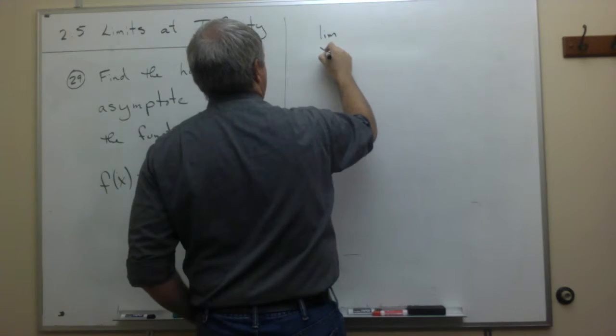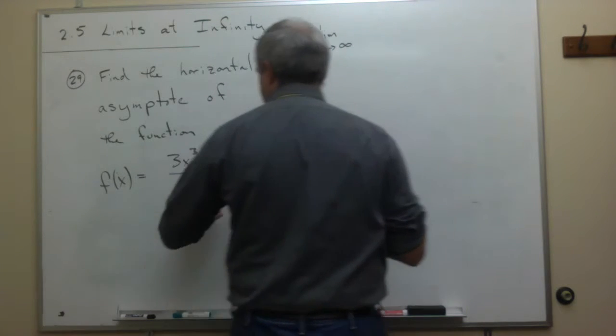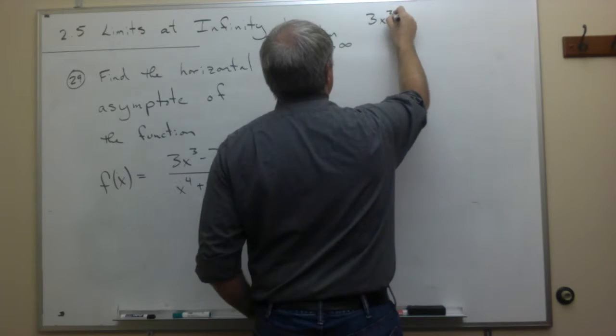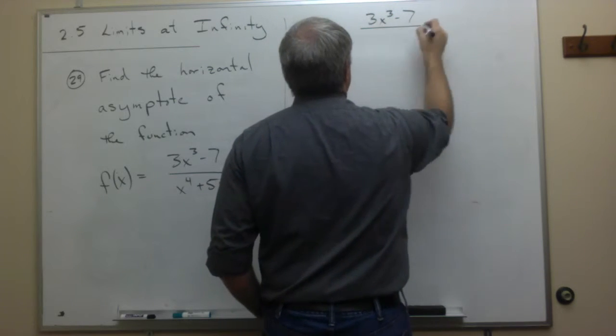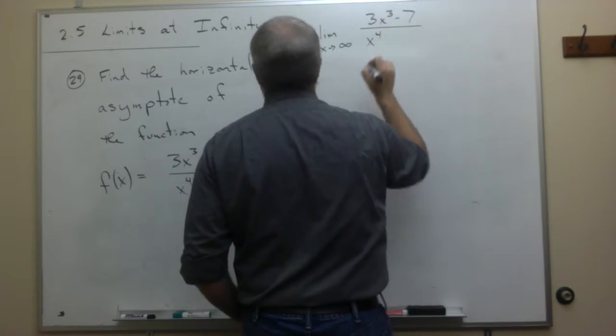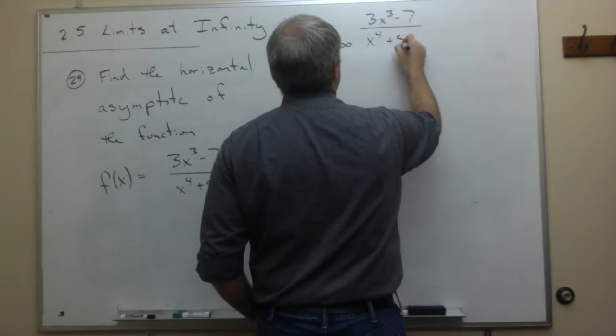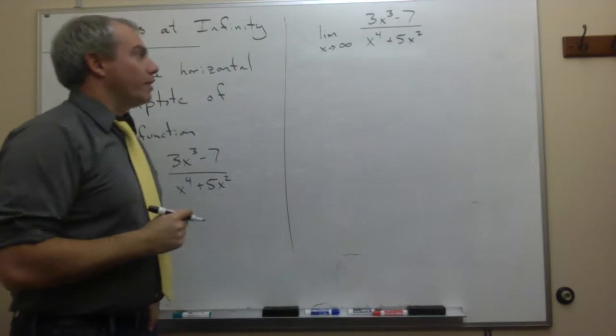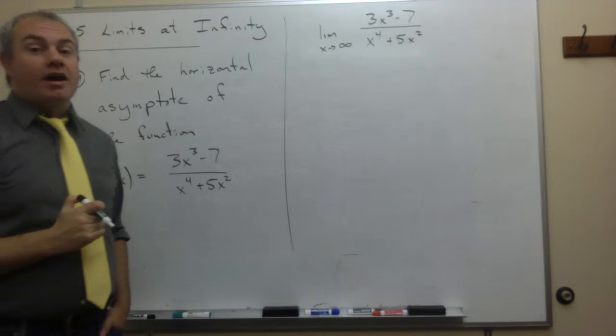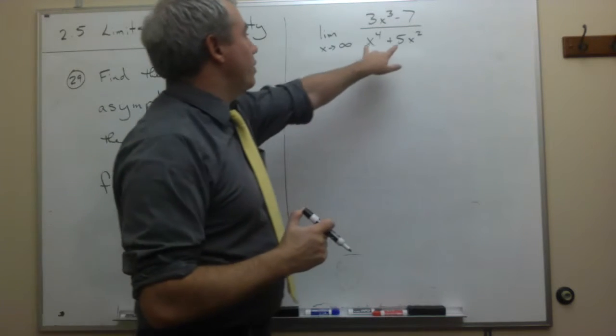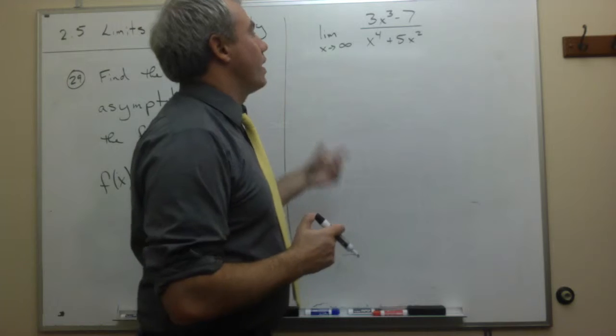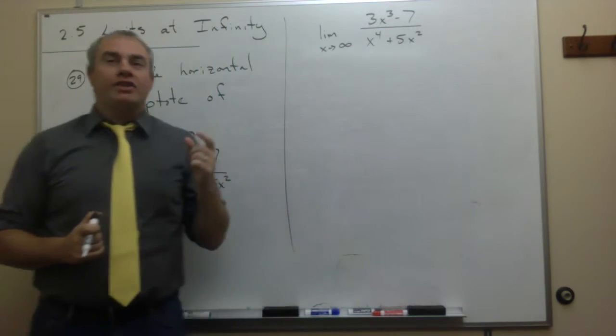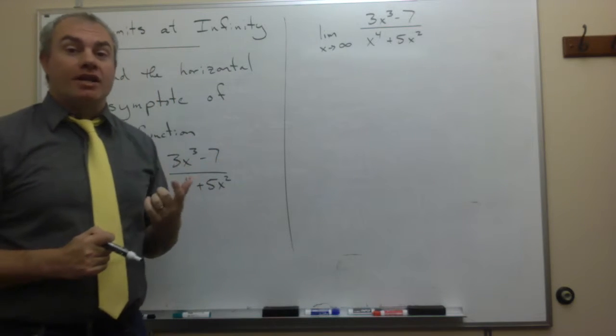This is the limit as x goes to infinity of this rational function, which is 3x cubed minus 7 divided by x to the fourth plus 5x squared. And we need to find that limit. Now, if we're going to find this limit, then I need to ask the question, looking at the numerator and the denominator, which of them has the highest power of x and what is it?